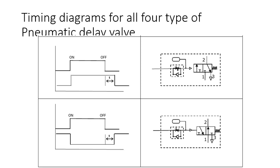On-delay and off-delay describe how you require the response — whether immediately or after a delay. The time delay valve responds slowly compared to a regular direction control valve which responds immediately. The time delay can be set by adjusting the needle valve (flow control) near the chamber — you can set the delay to 5 minutes or 5 seconds by controlling the flow rate of fluid fed to the time delay valve.